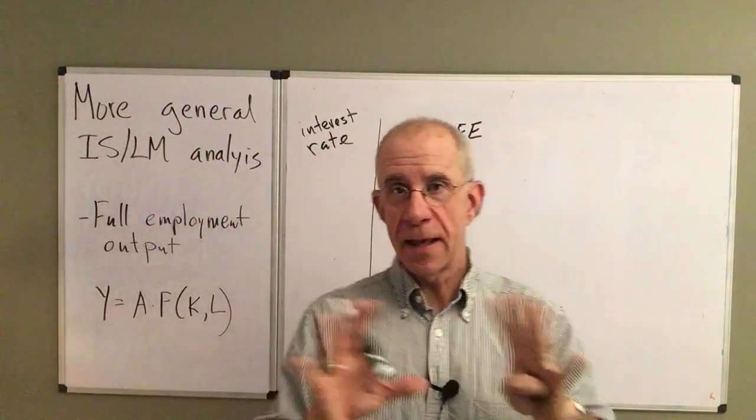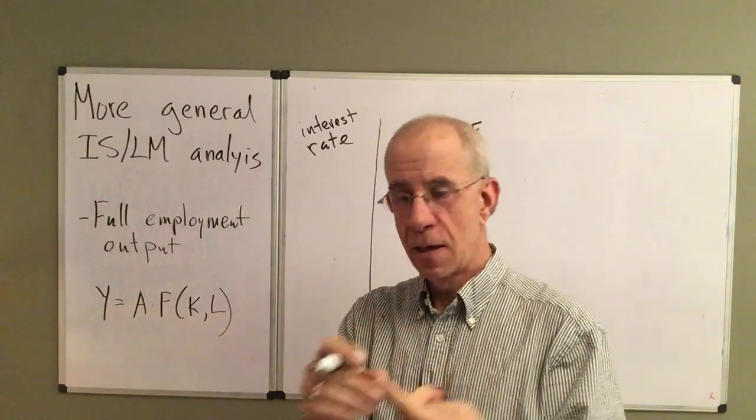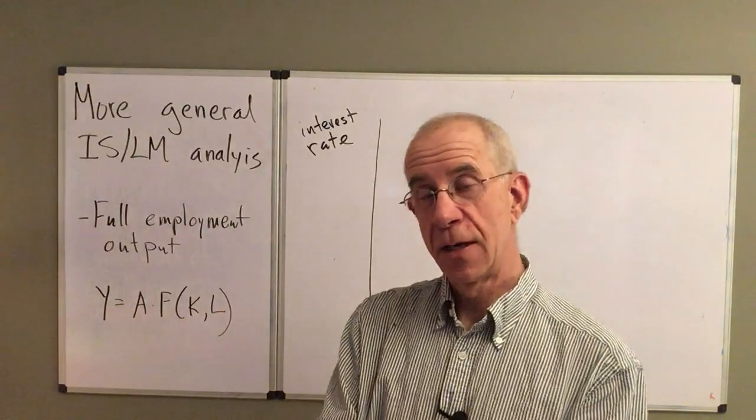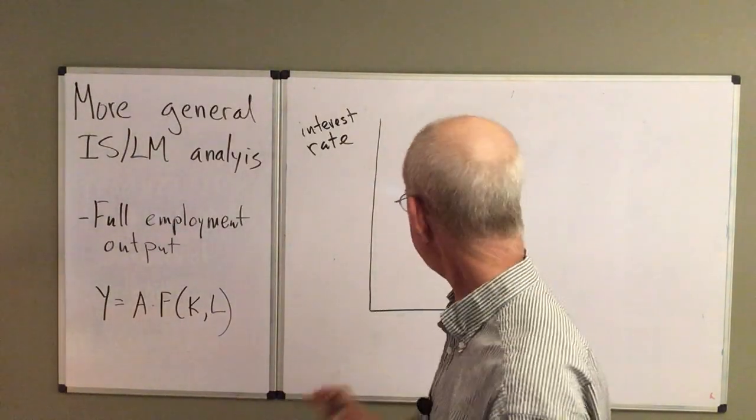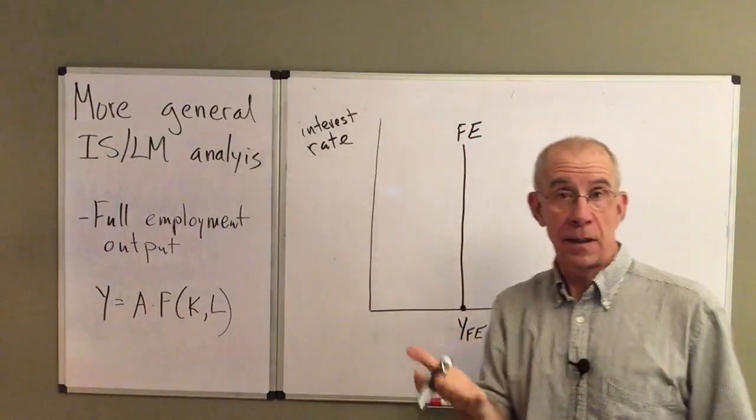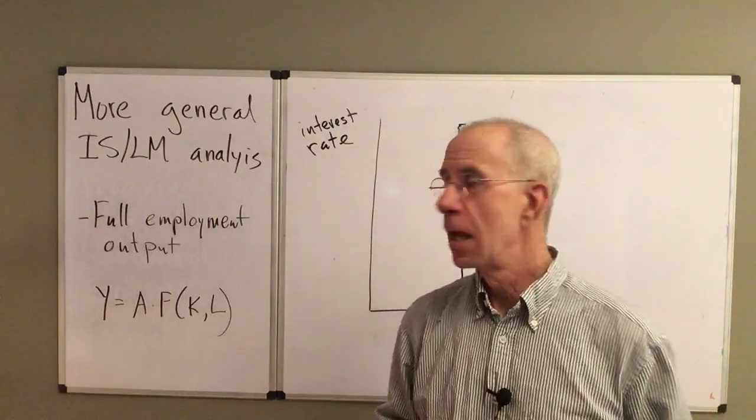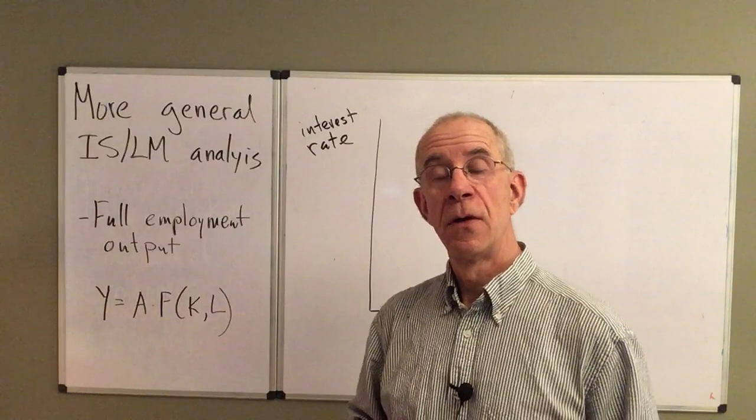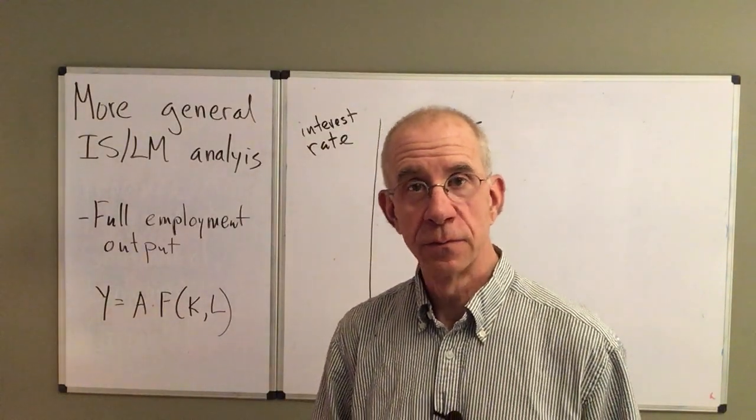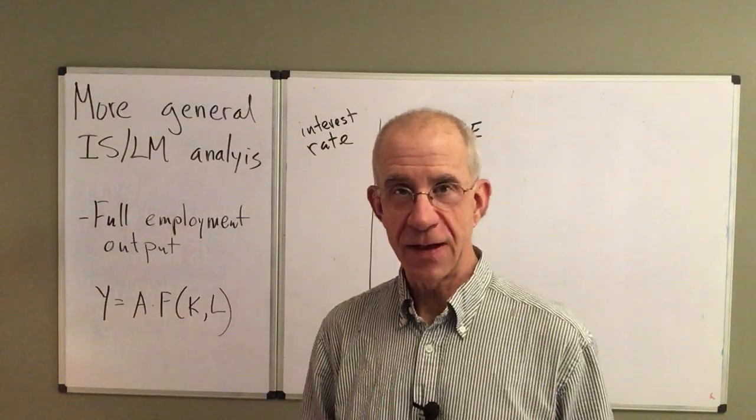So unless we change the capital stock, unless we change the labor stock, unless we change technology, this full employment level of output is given. Now indeed, the amount of workers can grow, there can be investment in capital, there can be technological changes which would shift this FE curve.